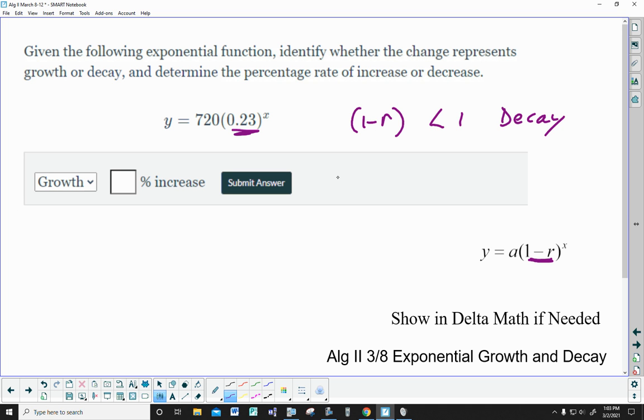So what you can do is go 1 minus r is equal to 0.23, subtract the 1 and you have negative r is equal to negative 0.77. Let me go fancy, 0.23 minus 1 is negative 0.77. Sorry, I can't read my decimals. I'm going to divide by negative 1 and you get r is equal to 0.77. So what is the rate? That's your r. R is 0.77.